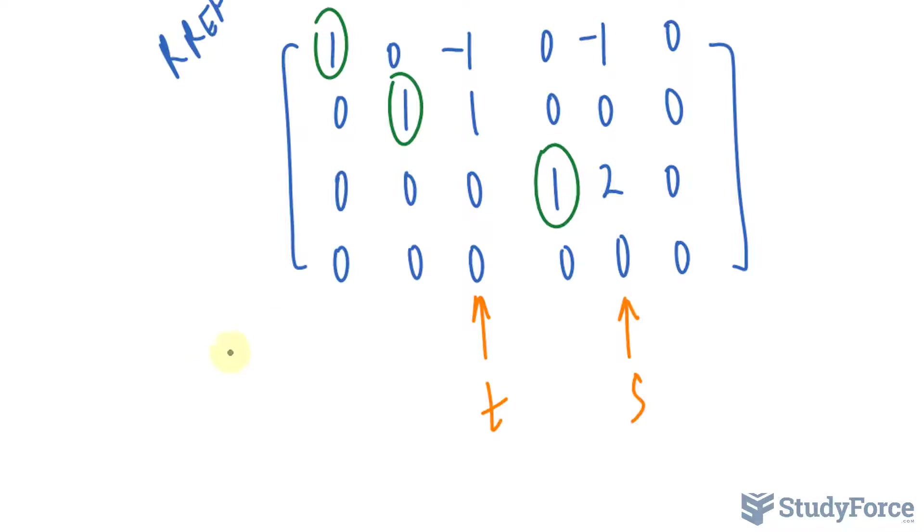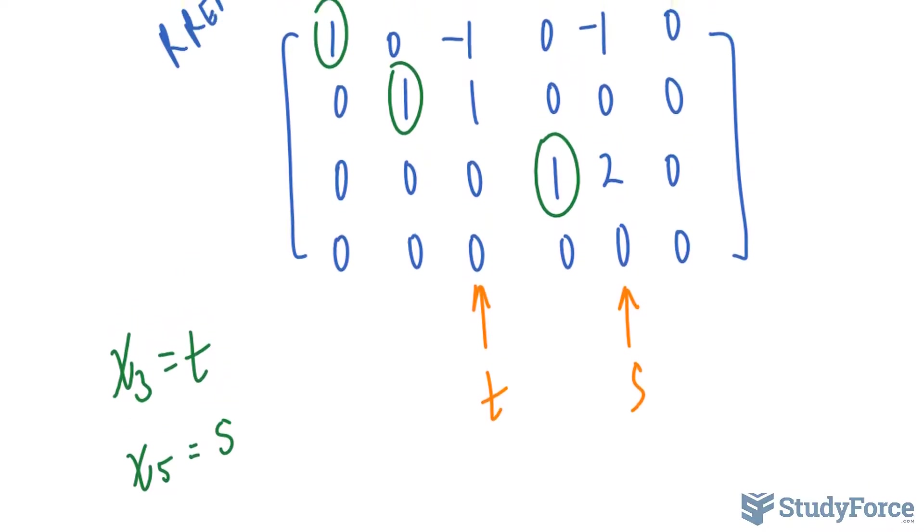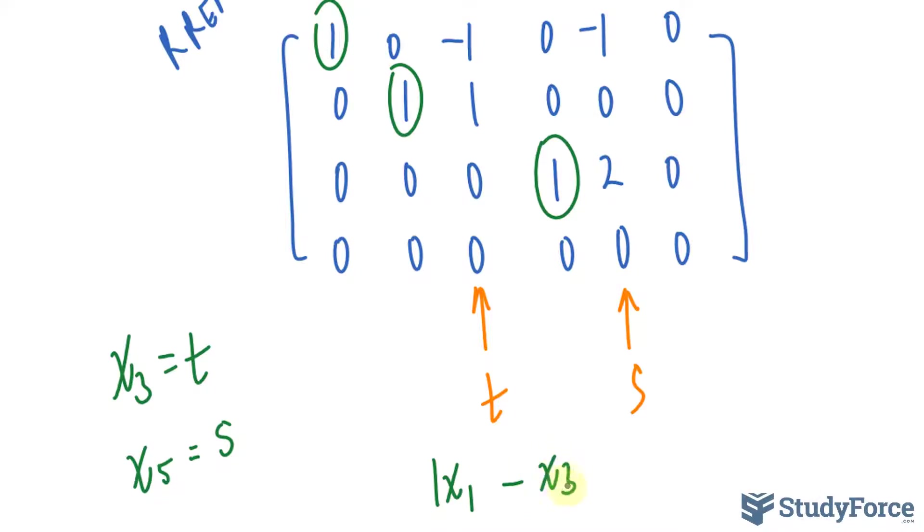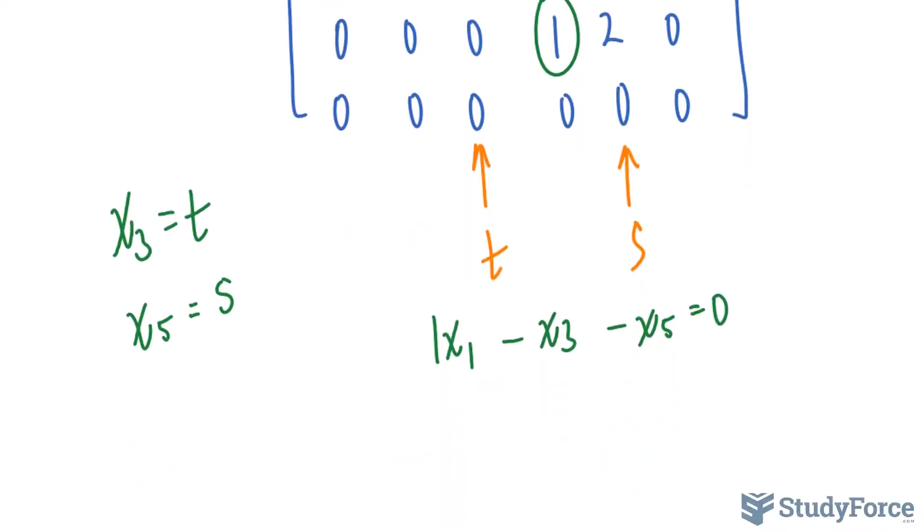Here's what I mean. First of all, I'll set x to the power of 3, this column equal to t, and x to the power of 5 equal to s. Then, I'll write out all of my rows as equations. So, the first row is 1x sub 1. There is no x sub 2 term minus x sub 3. There's no x sub 4 term, but there is an x sub 5 term. And that's equal to 0. And I'll substitute t and s wherever I see x sub 3 and x sub 5.